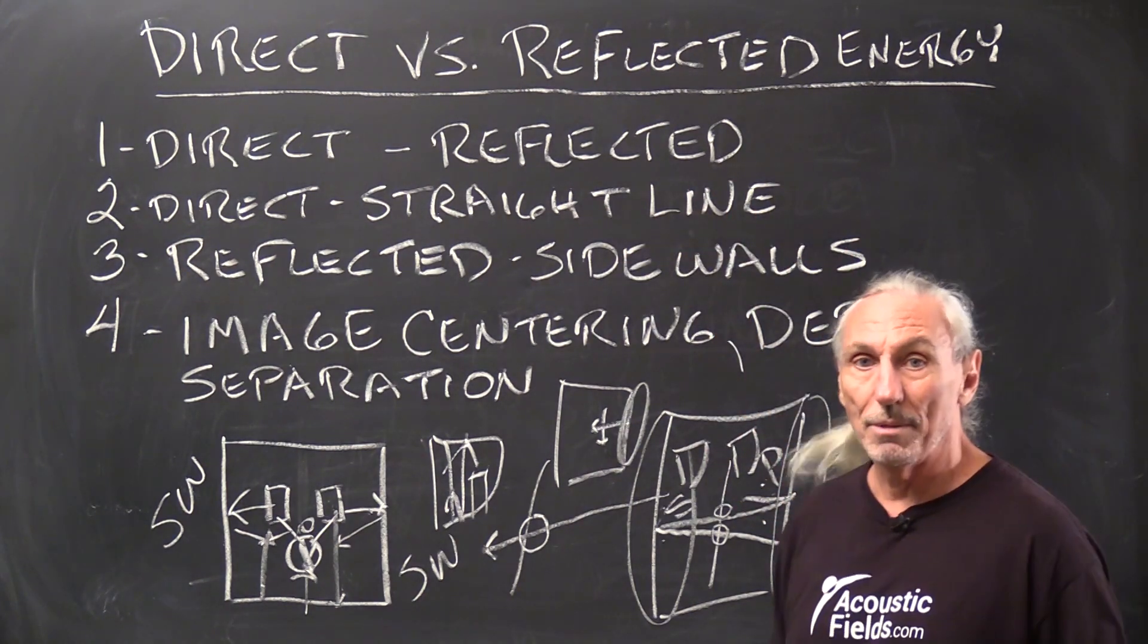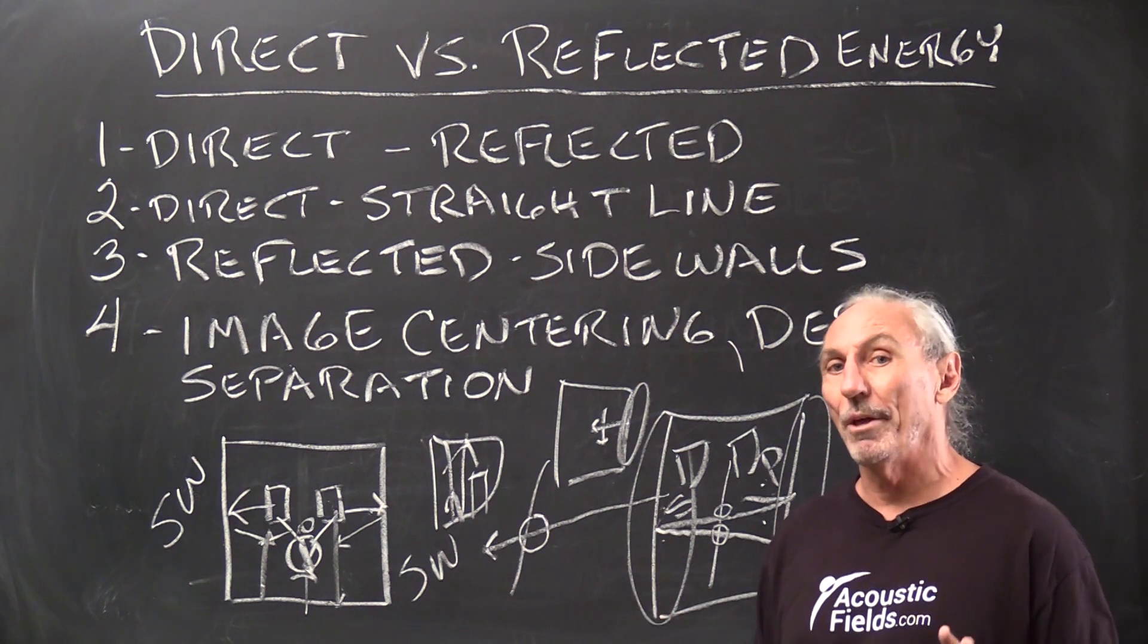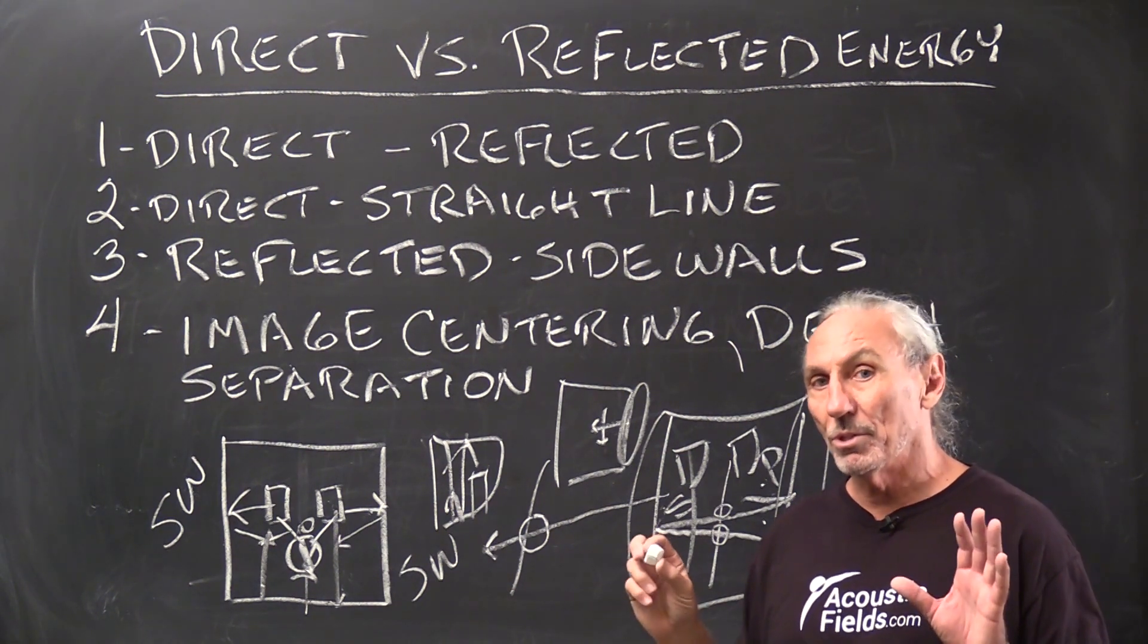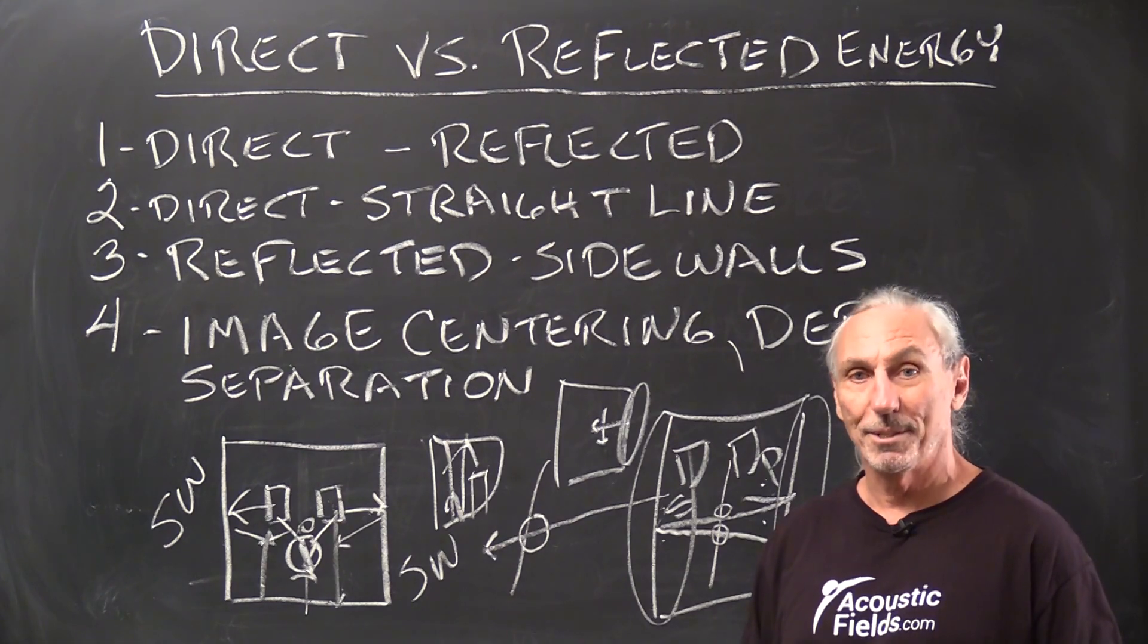So direct versus reflected energy management is all about that reflection. How do we slow it down so it produces the least amount of distortion with our direct? Hope that helps. Thank you.